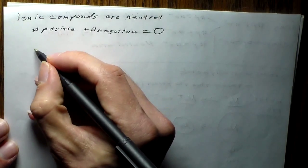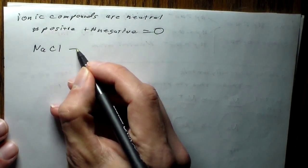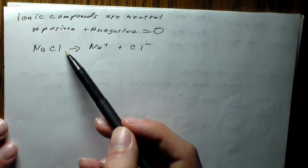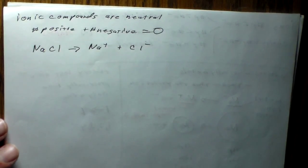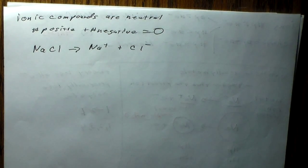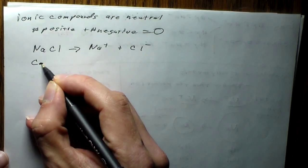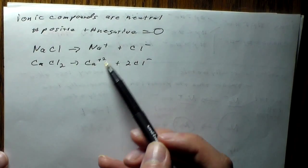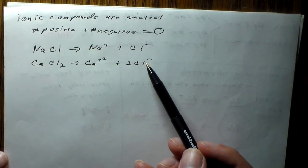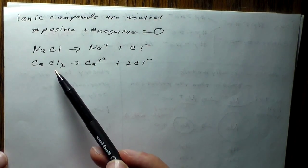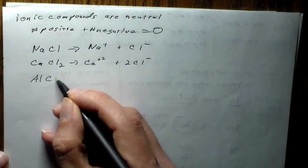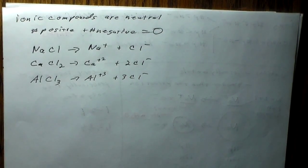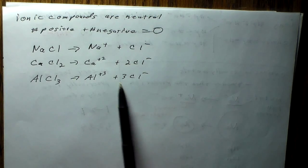For example, sodium chloride — plain old table salt — is Na⁺ and Cl⁻: plus one and minus one gives zero. That's why we never see Na₂Cl or NaCl₂. Calcium chloride is Ca²⁺ plus two Cl⁻: plus two and minus one times two equals zero — that's why this is the formula for calcium chloride. Aluminum chloride is AlCl₃: Al³⁺ plus three Cl⁻, giving plus three plus three times negative one, which equals zero.